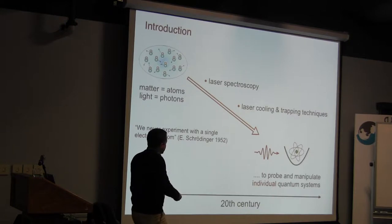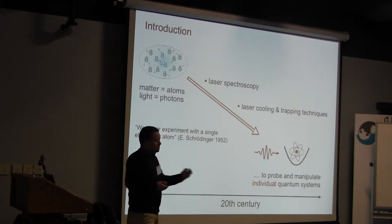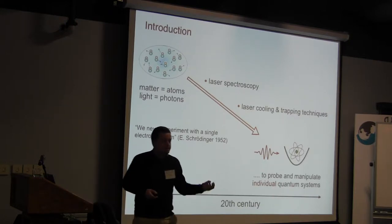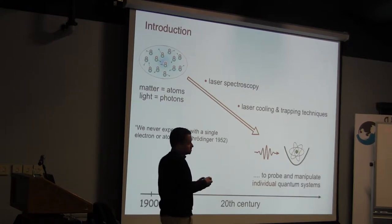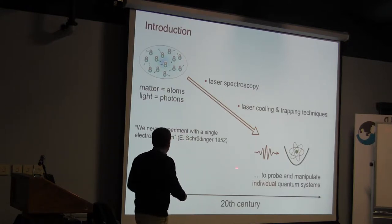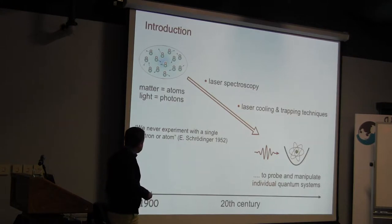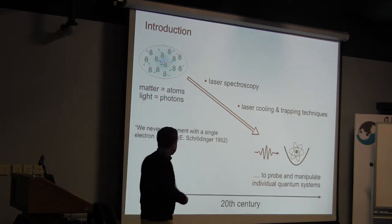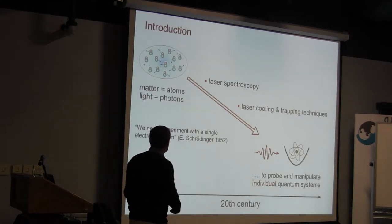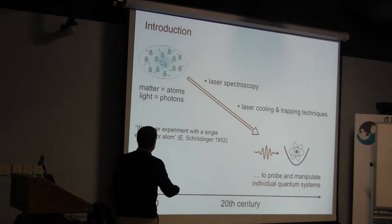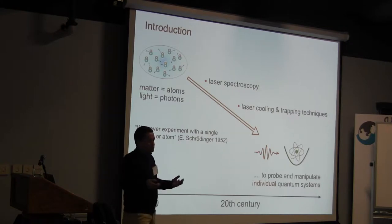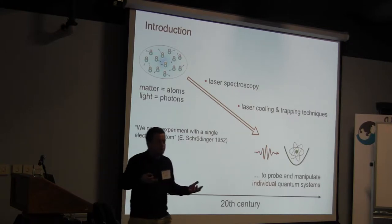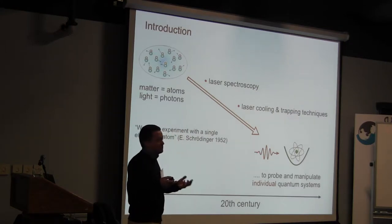We learned to trap, cool, and eventually take single quantum systems — atoms and photons — manipulate them, let them interact, and control positions in the lab. If you've heard the famous quote from Schrödinger in the 1950s, who said we would never experiment with single atoms, I think this puts a little bit of perspective on the things most of you now do on a daily basis.